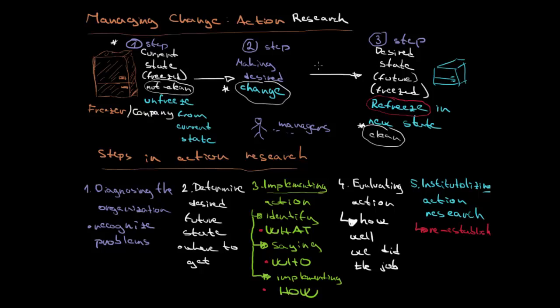And this is the whole point. I have brought at first the example of how the change is made and then the very basic idea about action research. At first we diagnose the organization. So the problem is our freezer is not clean. In the second point we determine our desired future, and that is we would like to have it clean. In the third, that is the most tricky one, we are implementing the action. So at first we identify what we are going to do, then who is going to do that, and then finally how we are going to do that.